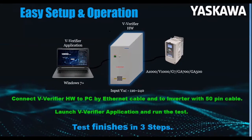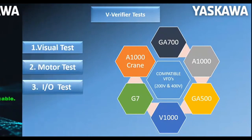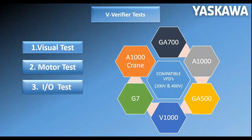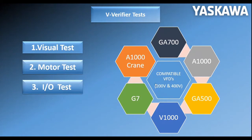The test is categorized into three steps. First, after all connections are made, the UI will execute three steps: visual step, then motor test, and IO test. This tool is compatible for 200-volt class and 400-volt class for all drives, which includes A1000, V1000, GA700, GA500, and also A1000 crane VFDs.